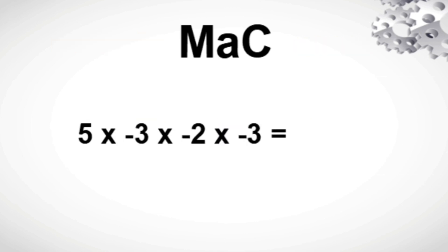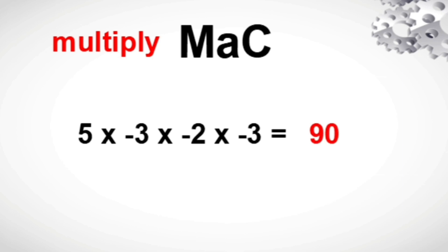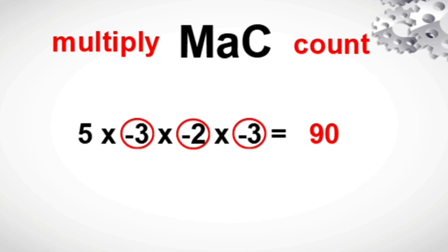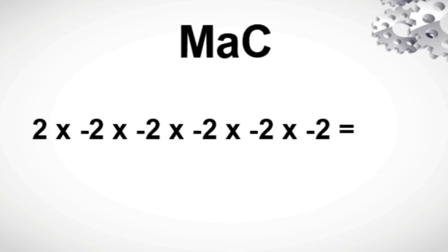This time let us have positive 5 times negative 3 times negative 2 times negative 3. First, multiply: 5 times 3 is 15, times 2 is 30, times 3 is 90. Next, count the number of negative integers in the factors — we have 1, 2, and 3. Since we have an odd number of negative integers, our product must be a negative integer. Therefore our final answer is negative 90.